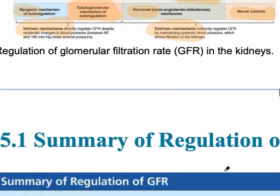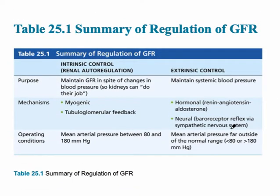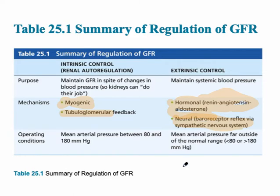The GFR summary slide shows two intrinsic controls — myogenic and tubuloglomerular feedback — and two extrinsic controls — the renin-angiotensin-aldosterone system (hormonal) and the neural system. The neural system is required when there are greater blood pressure changes than the intrinsic system can handle: below 80 mmHg or above 180 mmHg. Between 80 and 180, only the intrinsic control system is needed.